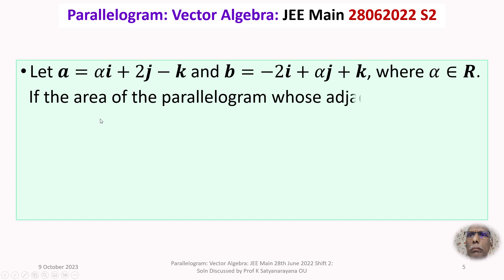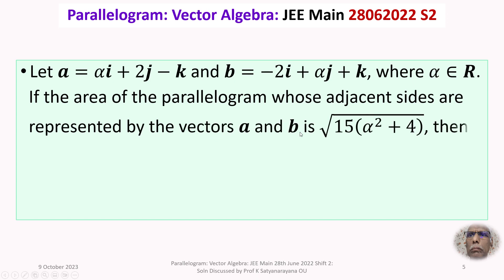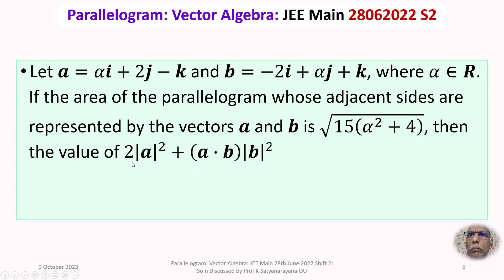If the area of the parallelogram whose adjacent sides are represented by vectors a and b is equal to the square root of 15 multiplied by (alpha squared plus 4), then the value of 2 times mod a squared plus a dot b times mod b squared is required to be found.